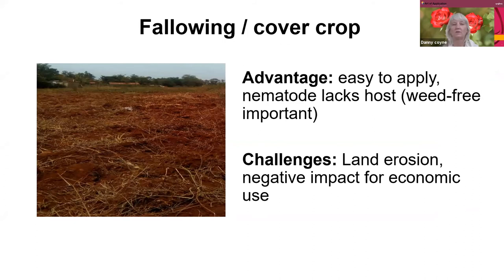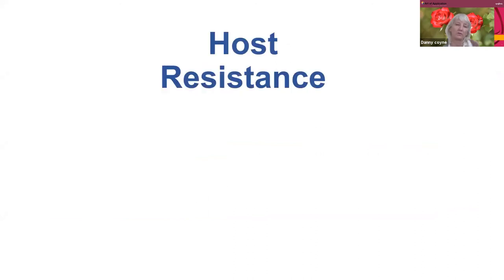Cover cropping — especially a leguminous cover crop — might be a good option. It should give nitrogen into the soil and could help get your nematode population down. Then there's host resistance, which is a very important and useful option, probably the best one.